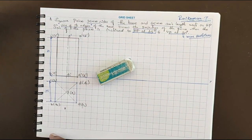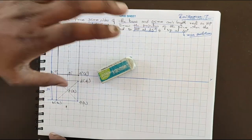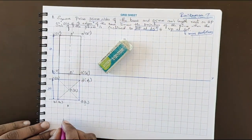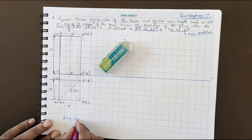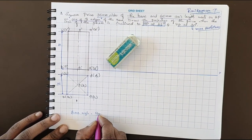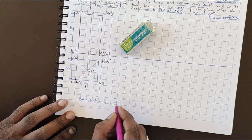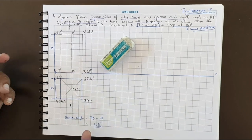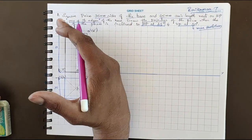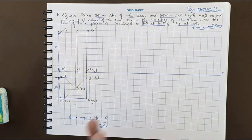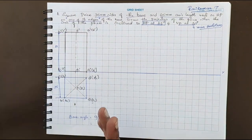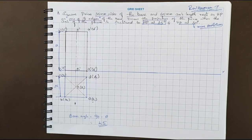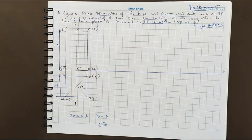You can't incline the axis to 45 degrees directly, so we find the base angle first. Base angle equals 90 minus theta — given 45 degrees, so base angle is also 45 degrees. First take the base angle, then construct. The base angle must always be taken towards the left-hand side. Please be careful — base angle goes towards the left-hand side.